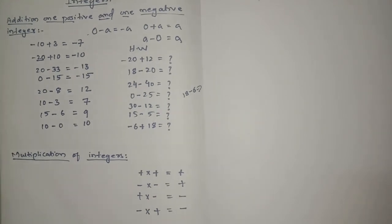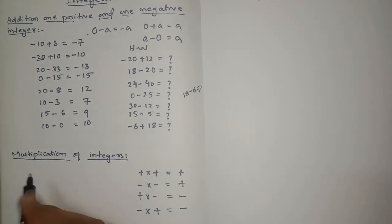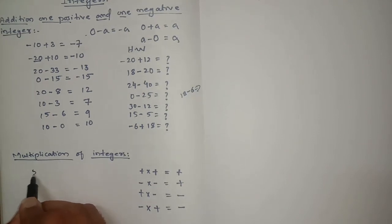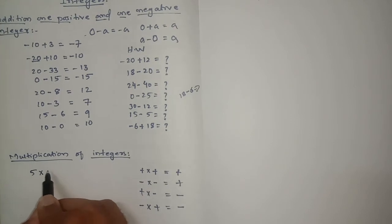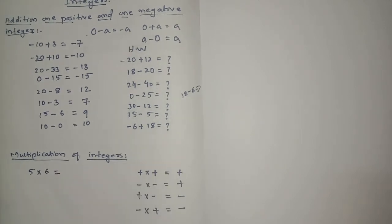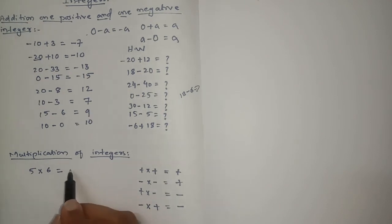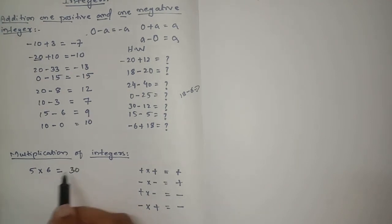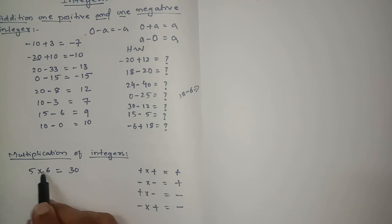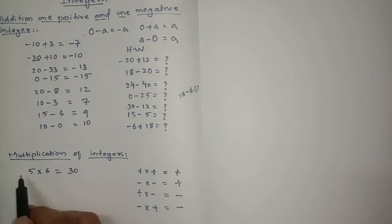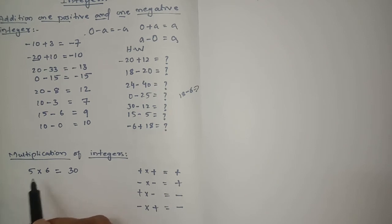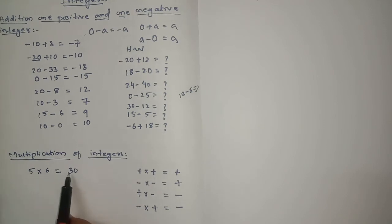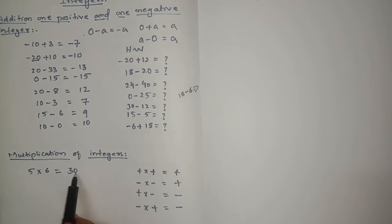Let's take some examples. Plus 5 into plus 6: plus into plus is plus, so the answer is plus 30. If the sign is not mentioned before a number, the sign is considered plus.